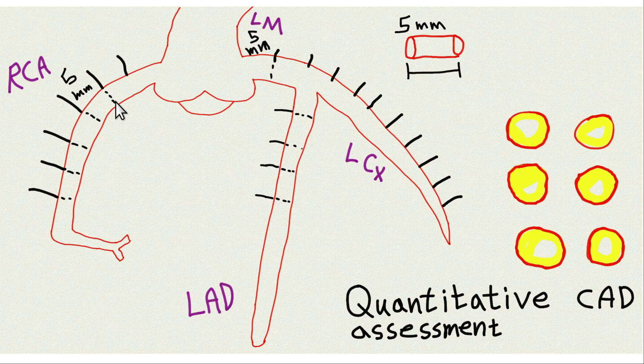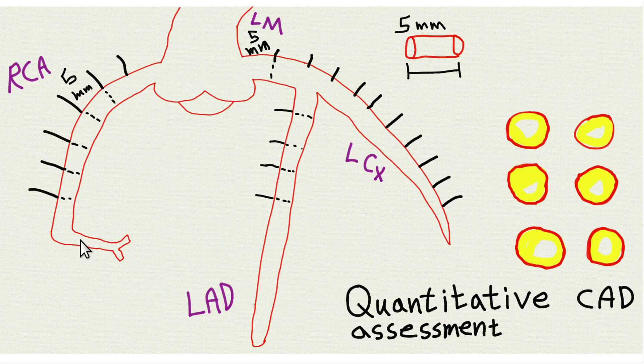Theoretically, that sounds fantastic. But here's the catch: what William Roberts found is that atherosclerosis is never just in one segment. It's always diffuse and of similar severity throughout the artery.